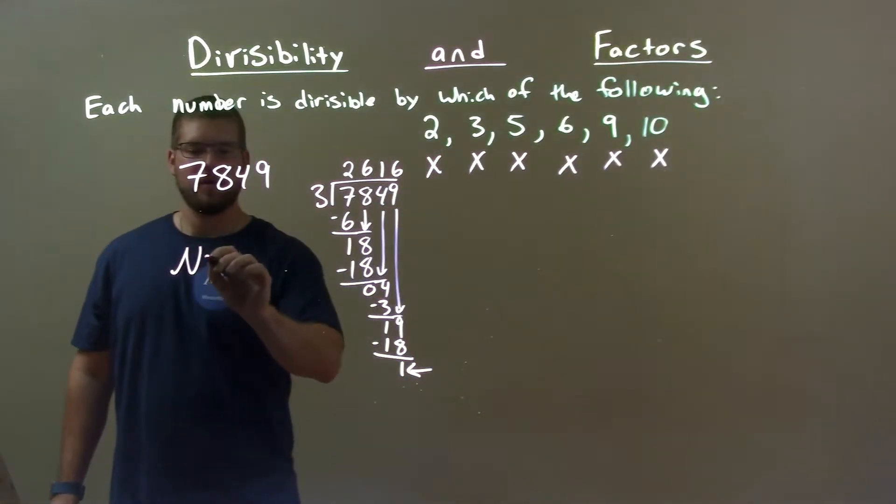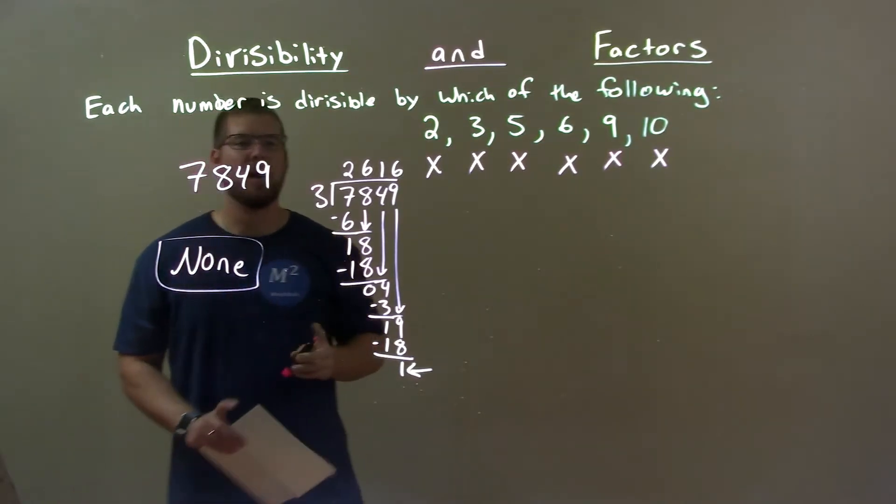So our final answer is really none. None of these numbers go in evenly into 7,849.